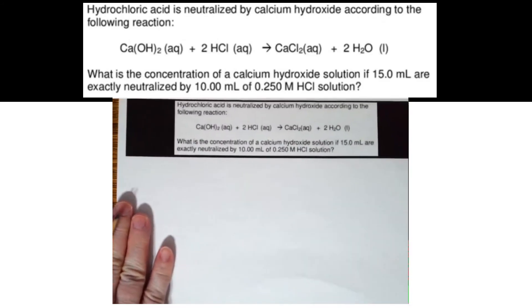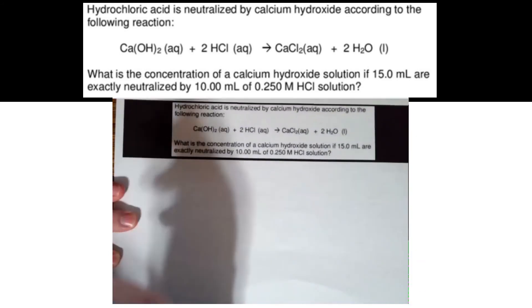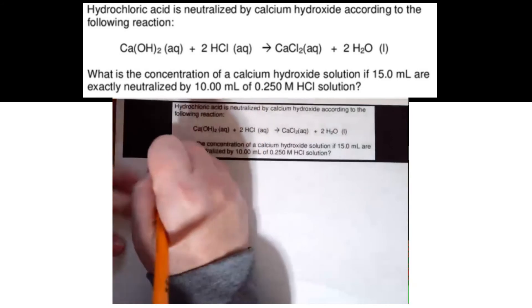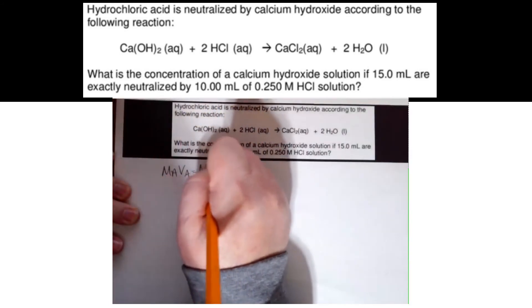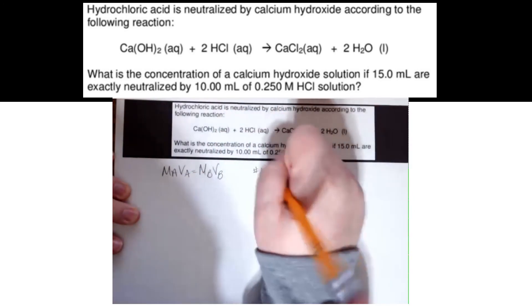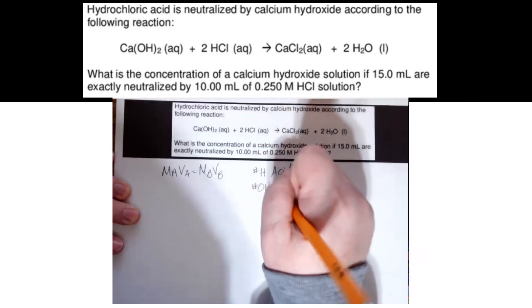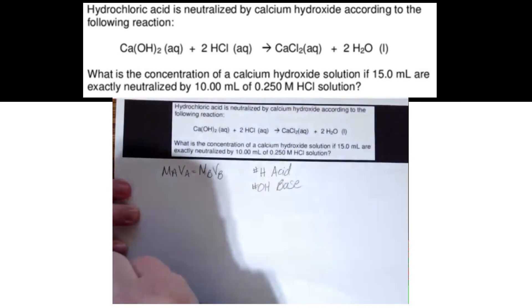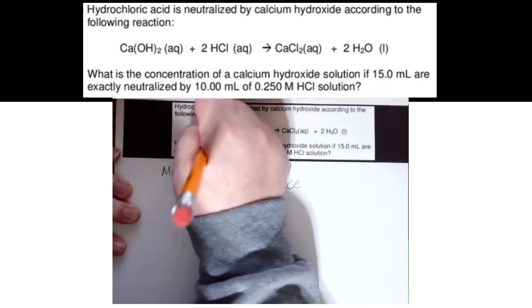Let's look at this equation. It's our last one. So here we go. Let's write our equation. MAVA equals MBVB. I have to remember that the number of H's matters for the acid. The number of OH's matters for the base. So let's look at my neutralization equation. There's the acid. There's the base.